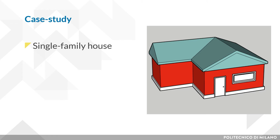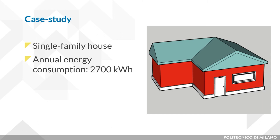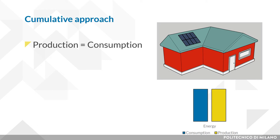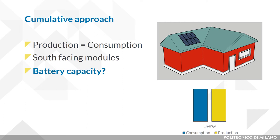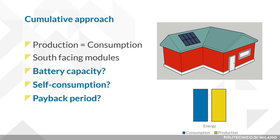To clarify the concept, we will design the PV system of a single family house with both approaches. The annual electric energy consumption is 2,700 kWh and we can install PV modules with different orientations on the roof. Starting with the cumulative approach, you add PV modules until energy production equals annual energy consumption. South-facing orientation is the most convenient because it has the highest energy output per unit area. For batteries, you can calculate the average daily consumption and size accordingly. The pre-design phase is then complete, but you cannot determine how much energy will be self-consumed, how long to recover the investment, or what the emission savings will be.